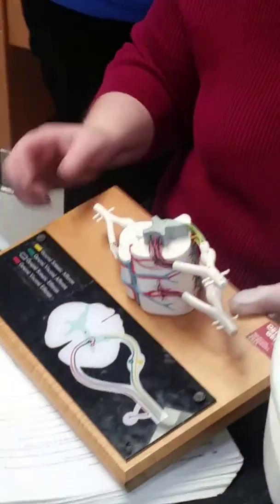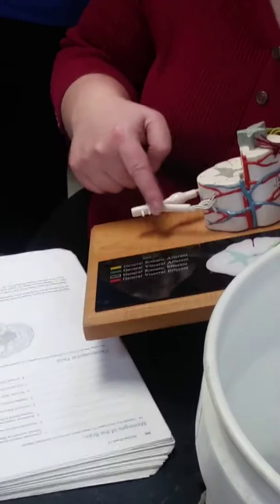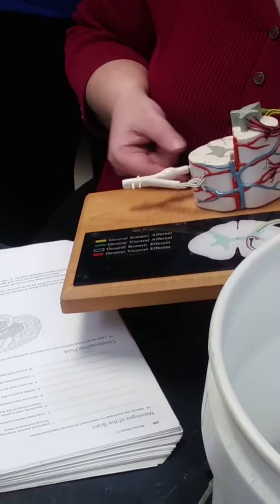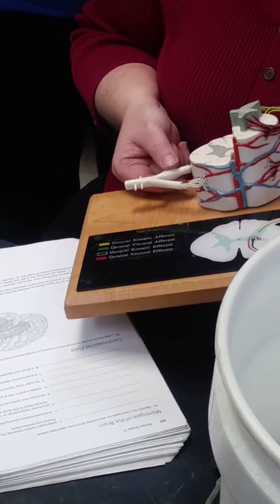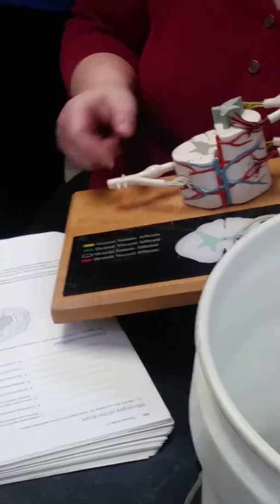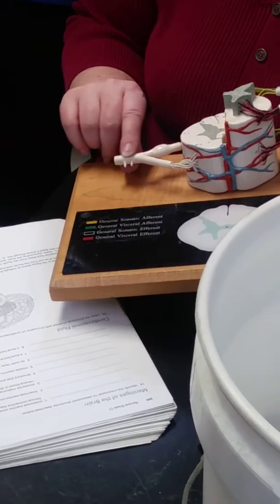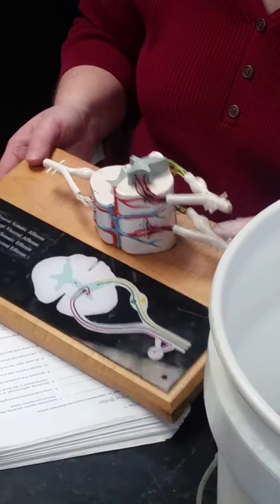Now, if you look over here, if you look at it sideways, you can see the Y. This side of the Y is the ventral root. This side of the Y is the dorsal root. The swelling is the dorsal root ganglion. The ventral root, the dorsal root, come together to form the spinal nerve.